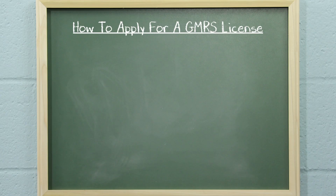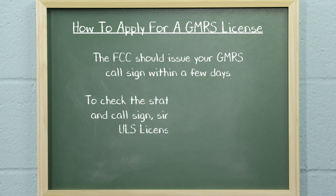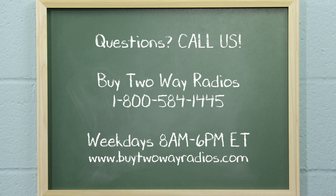And you're done. The FCC should issue your GMRS call sign within a few days. To check the status of your license and call sign, simply log in to the ULS License Manager. And there you have it — that's how to register for a GMRS license from the FCC. If you have any questions or want to know more about GMRS licenses, please don't hesitate to give us a call, email, or hit us up in our online chat at buy2aradios.com. I'm Tommy with buy2aradios.com and this is Radio 101. Class dismissed.